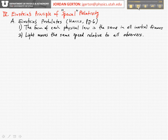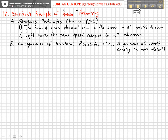Let's now discuss in a fairly qualitative way three particular consequences of Einstein's postulates that are quite non-intuitive, particularly since in our everyday lives we're used to using basically Galilean relativity and Galilean transformations. This discussion will be pretty brief and qualitative — it's just a preview of what's coming in more detail in the next several lectures.